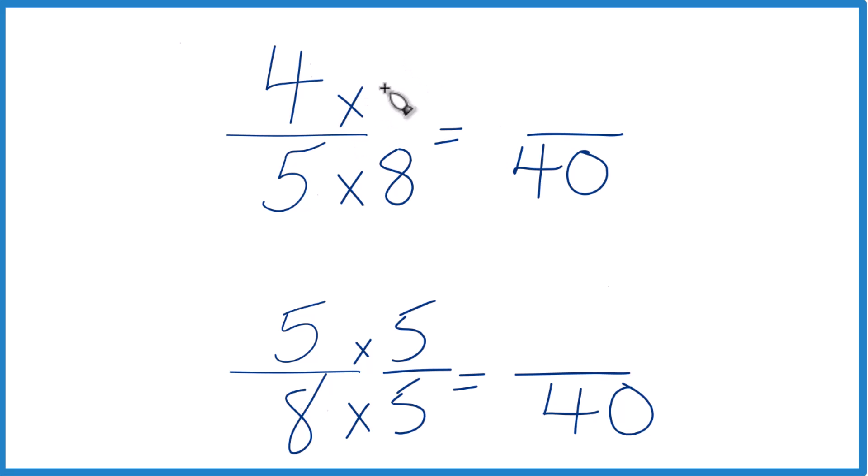Up here, multiply by 8. So 8 over 8, that's 32. Well, down here, 5 times 5 is 25. And now we have the same denominators.